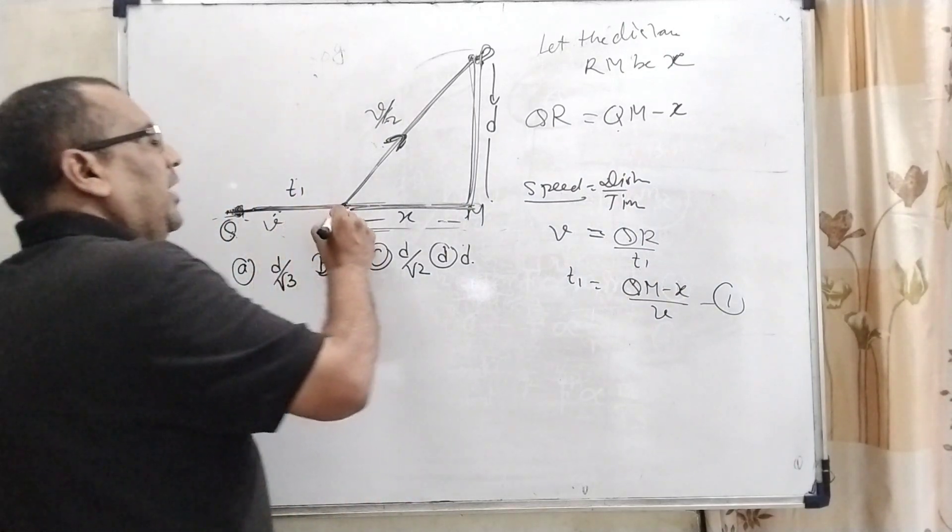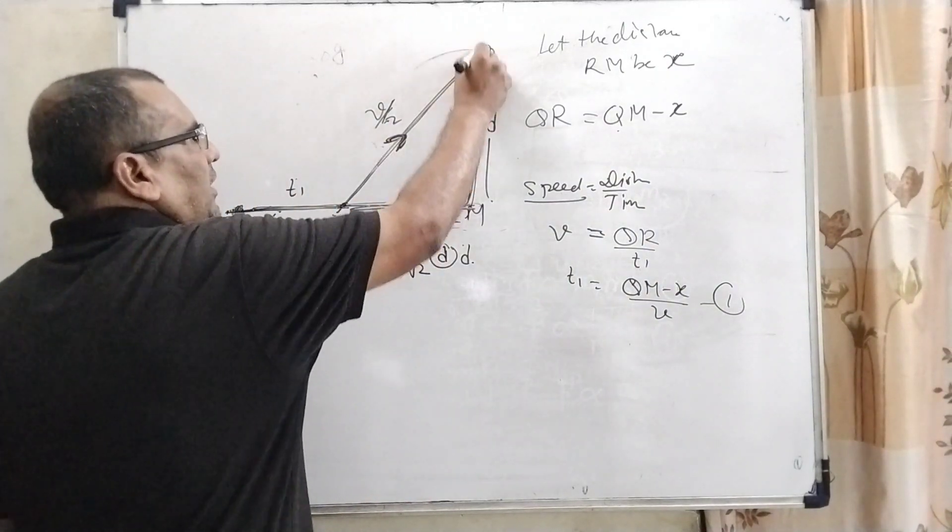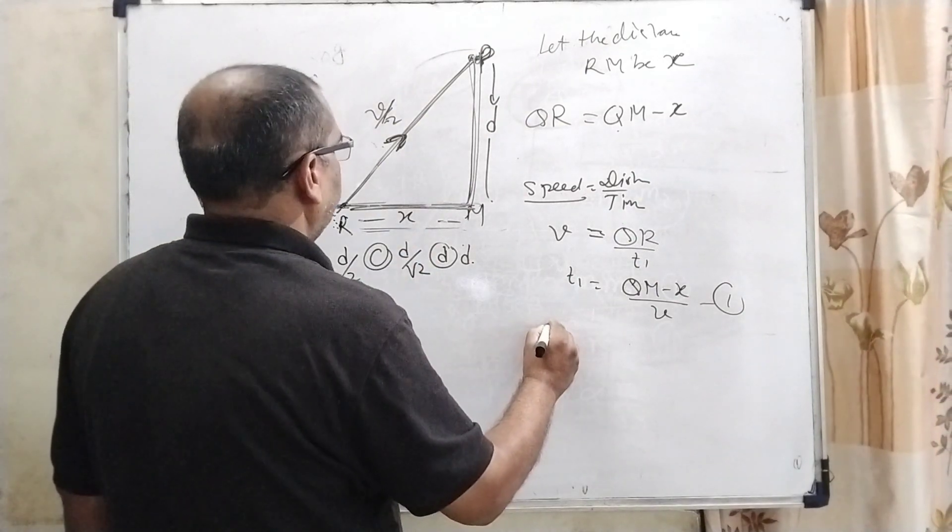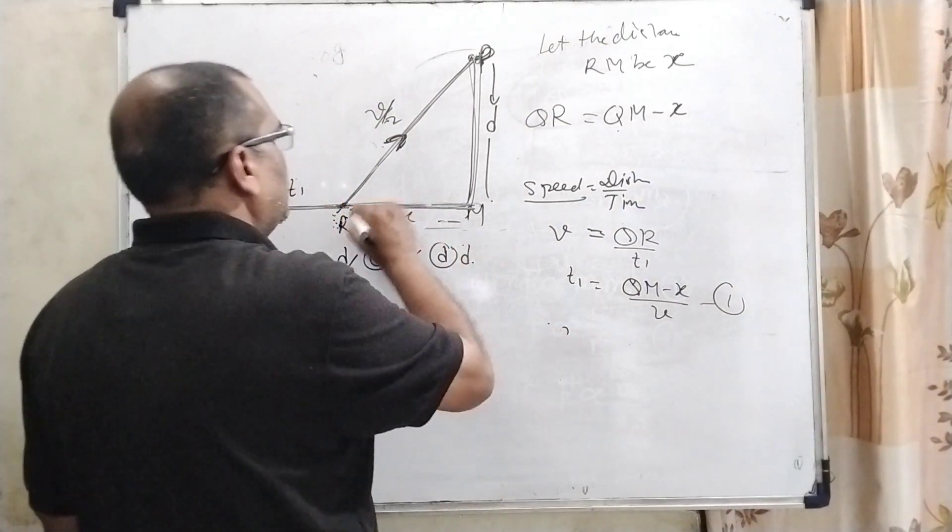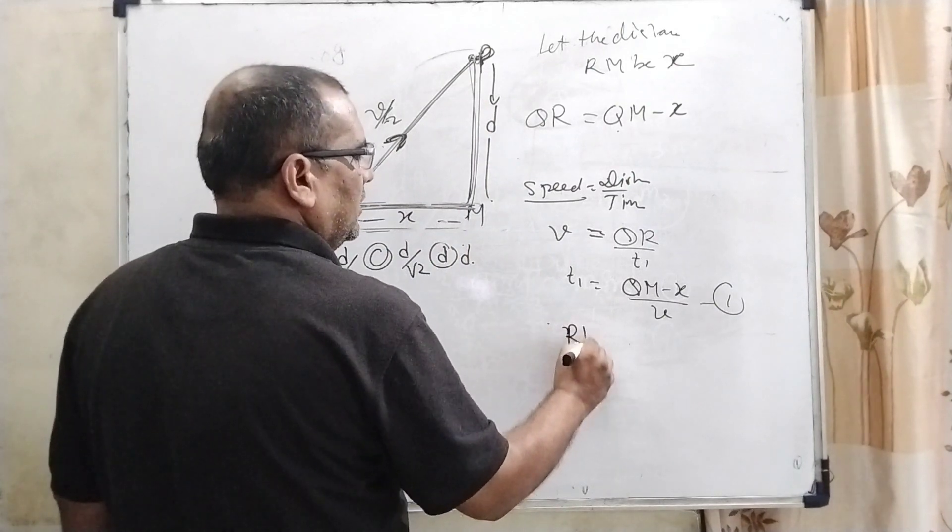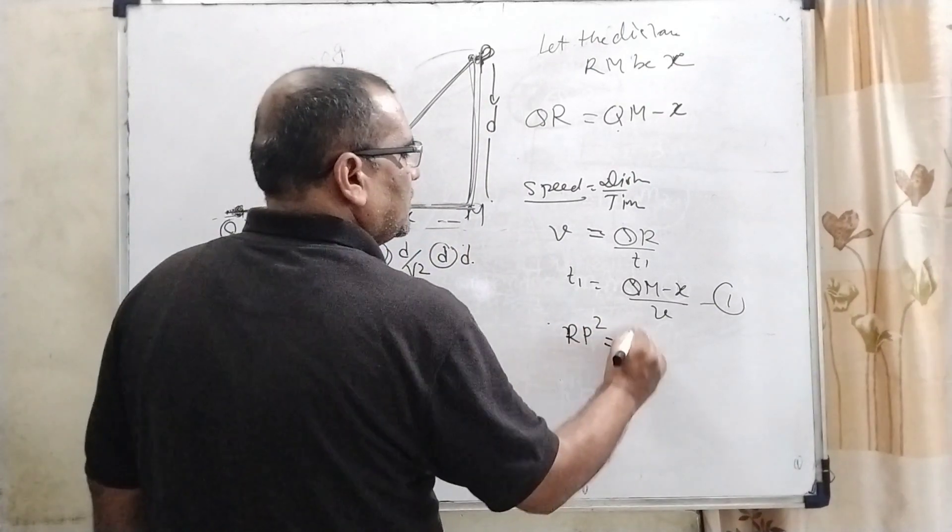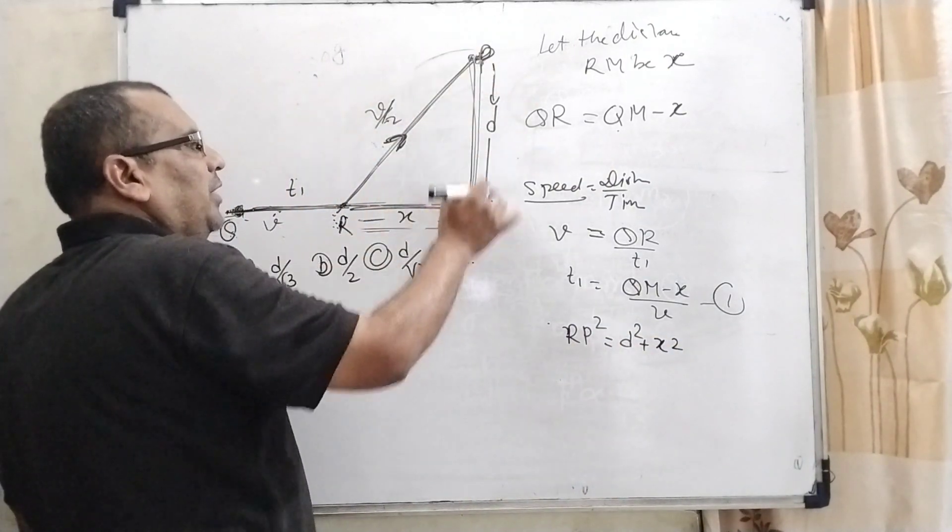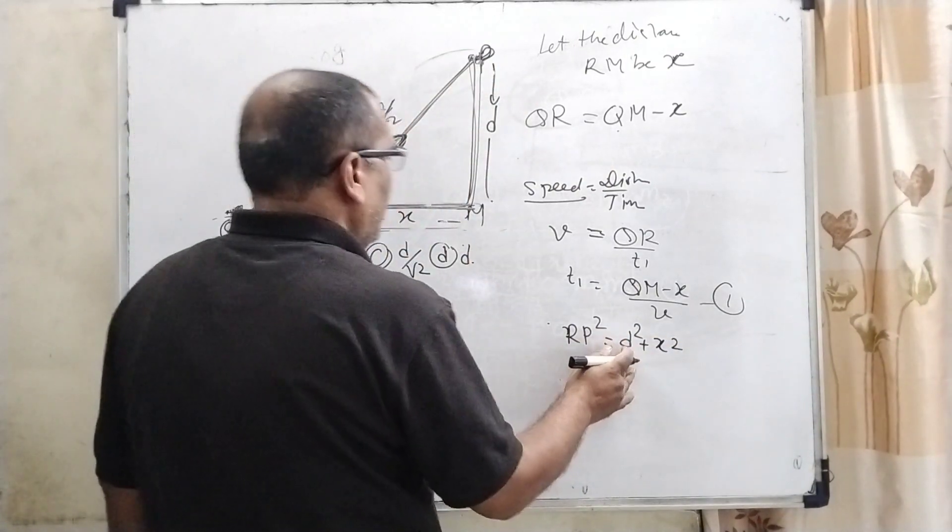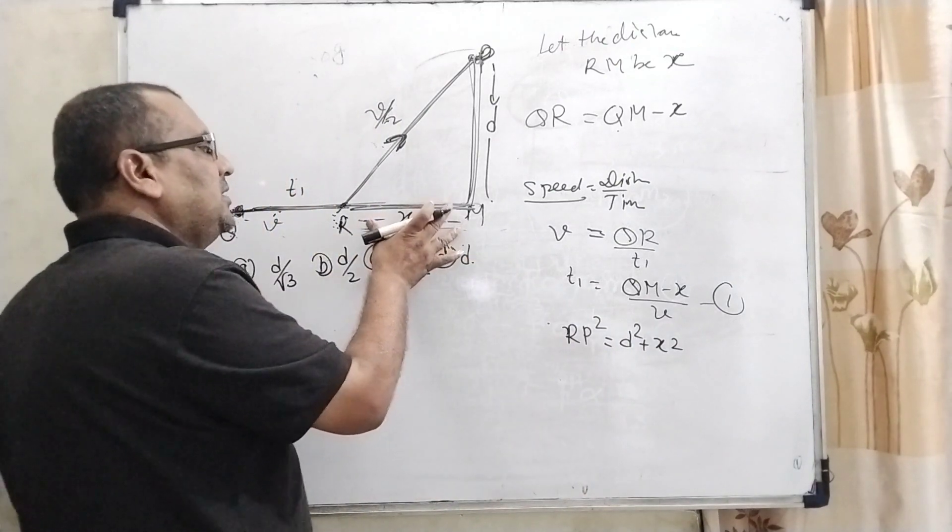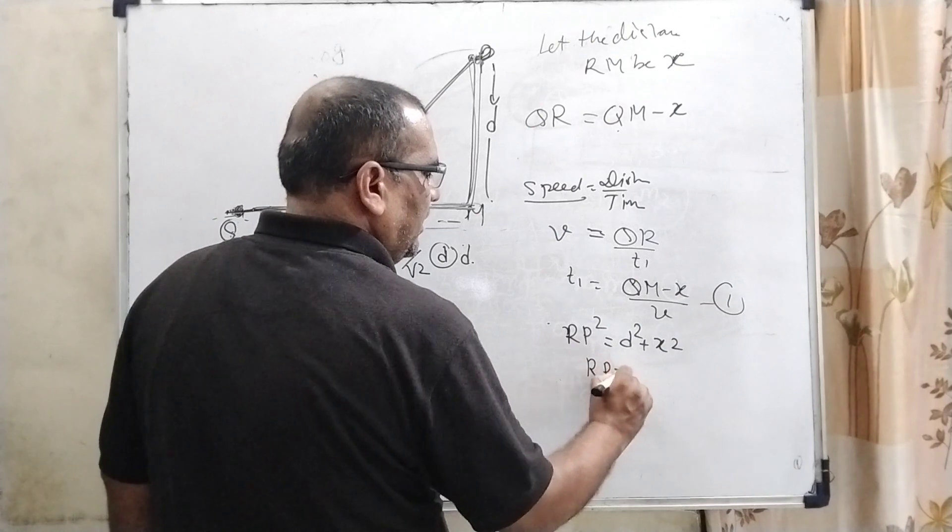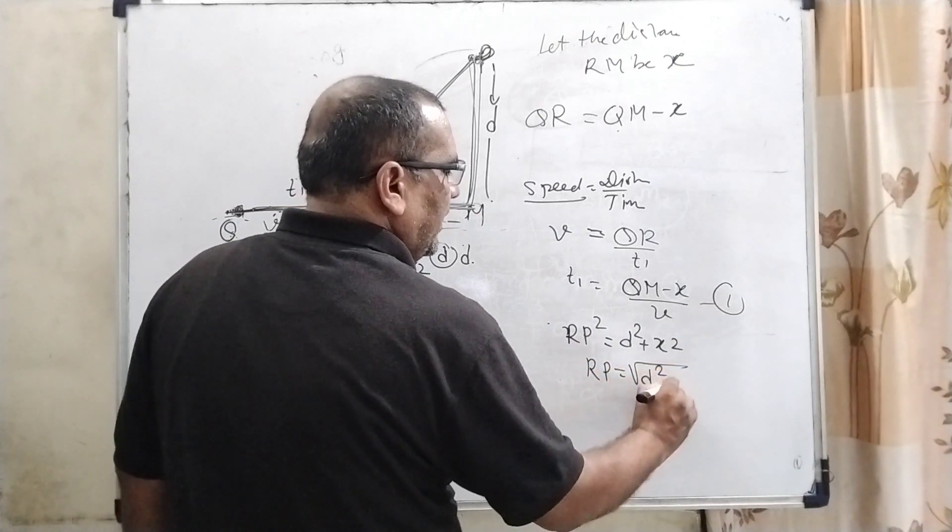Now we have to find out the distance R to P. By using Pythagoras theorem, then RP square equals D square plus x square, because this distance P to M is given as D. And RM distance is x. Then RP equals root of D square plus x square.